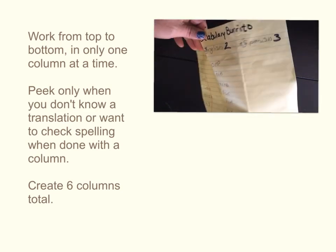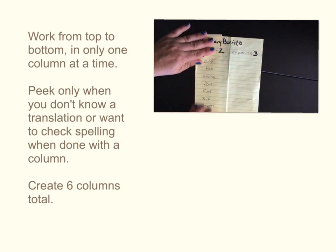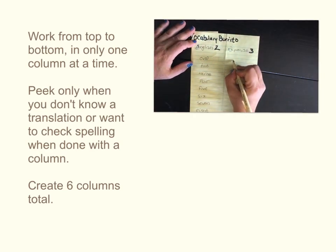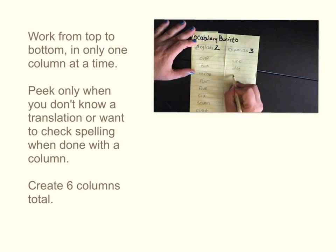When you're done with those, put away your vocabulary list and fold back column one. This is gonna make you actually think to create column three. You worked with all the words once and you're just gonna go back, so we're gonna go from English back to Spanish.